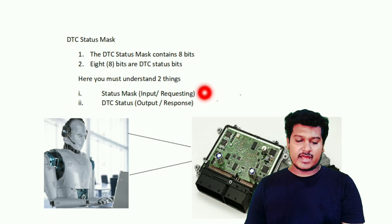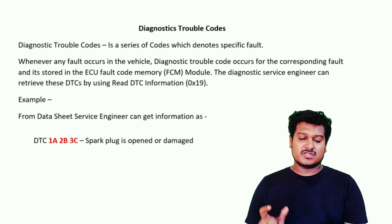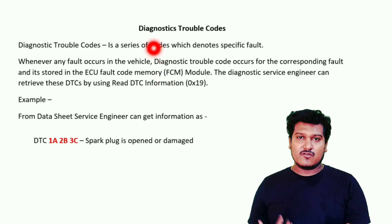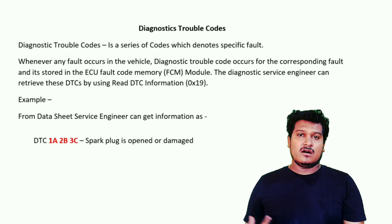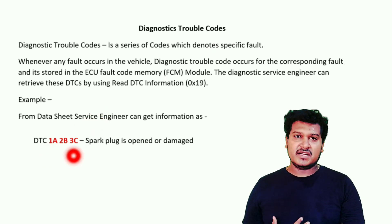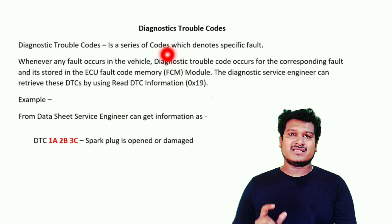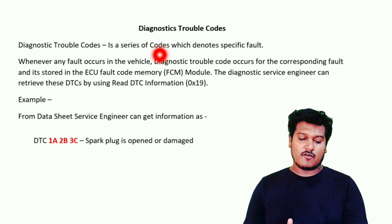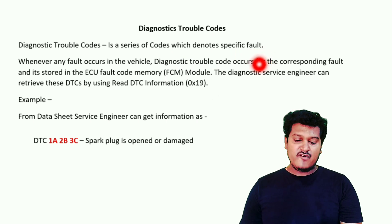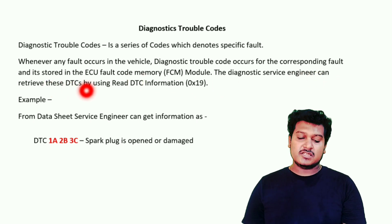First, let's understand what exactly Diagnostic Trouble Codes are, since we are using Service 0x19 to request DTCs. Diagnostic Trouble Codes are a series of codes which denote specific faults. Whenever any fault occurs in the vehicle, a corresponding DTC is generated and stored in the ECU fault memory — the FCM, or Fault Code Memory Module.